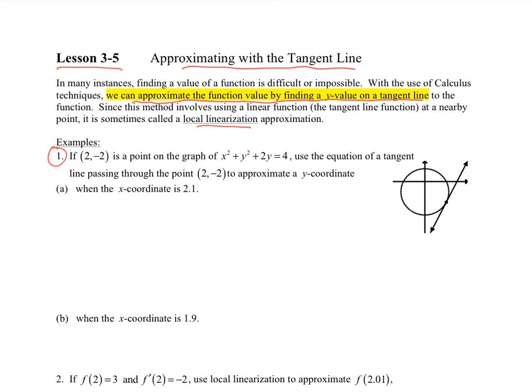Let's look at some examples and see how this works. If (2, -2) is a point on the graph of this circle, use the equation of a tangent line passing through (2, -2) to approximate a y-coordinate when the x-coordinate is 2.1.